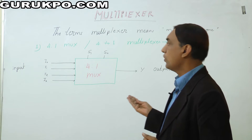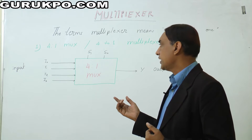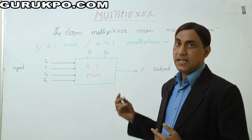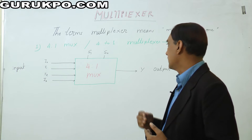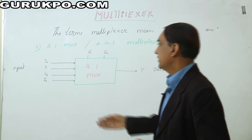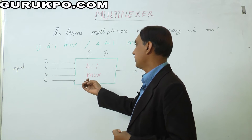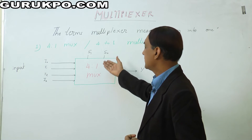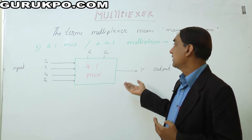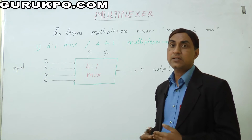This is the block diagram of the 4 to 1 multiplexer. There are four input lines coming from any information, and we have two data selectors S0 and S1. The output is Y. The data selector decides which information comes out from the multiplexer — that is why this is called the multiplexer.